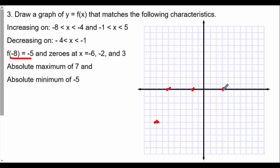We also have an absolute max of 7, so the highest point of this graph will be at y equals 7, and an absolute min of negative 5. Now a couple of things to keep in mind — we already have a point at y equals negative 5, and that's negative 8 comma negative 5. Having an absolute minimum of negative 5 doesn't mean only one point has that lowest value; it just means the lowest value for y along the entire function is negative 5. We definitely have that point at negative 8 comma negative 5, but we can have another one.